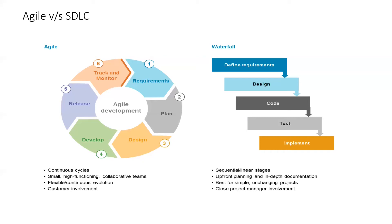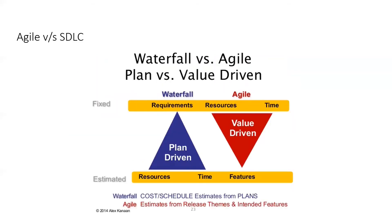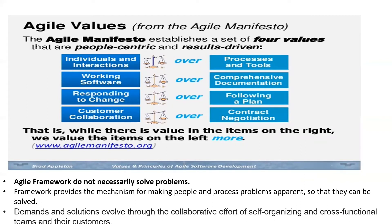To summarize: traditional methodology is plan-driven, while Agile is a value-driven system. Agile values are more people-centered and result-driven compared to traditional methodology. Agile framework does not necessarily solve problems directly but provides a mechanism for making problems apparent so they can be solved — it's about problems surfacing frequently and people working to resolve them. Demands and solutions evolve through collaborative effort of self-organizing, cross-functional teams and their customers, with everyone working together and customer involvement at every stage.